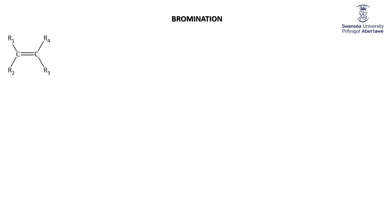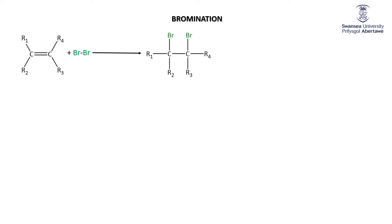For our next reaction we'll look at bromination. If hydrobromination was adding a hydrogen and a bromine across the double bond, bromination is just adding two bromines. React the alkene with Br2 and you make the dibromo alkane. You could do the same thing for Cl2.